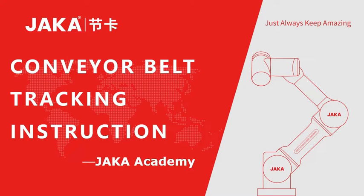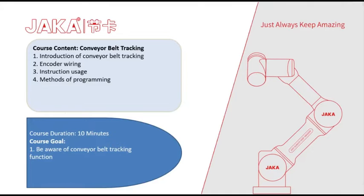Conveyor belt tracking instruction. This course will be divided into 4 main parts: 1. Introduction of conveyor belt tracking, 2. Encoder wiring, 3. Instruction usage, 4. Methods of programming. The course duration will be around 10 minutes and the main goal is being aware of the conveyor belt tracking function.